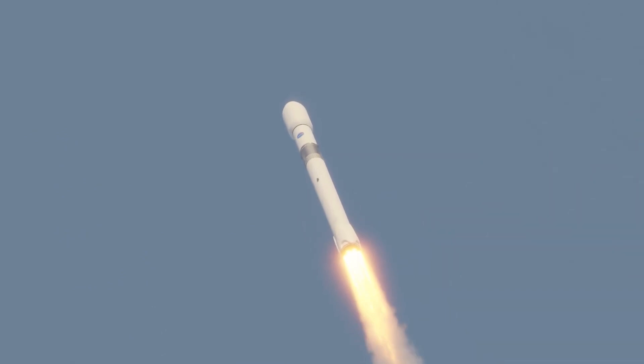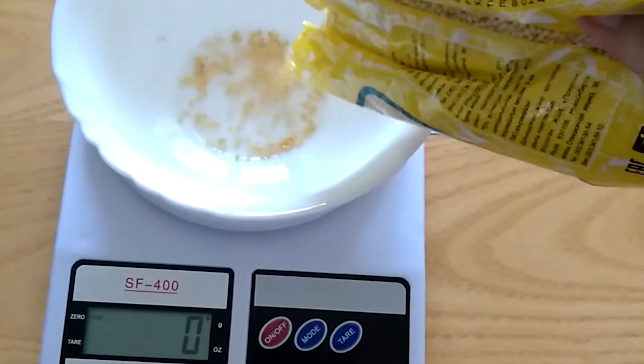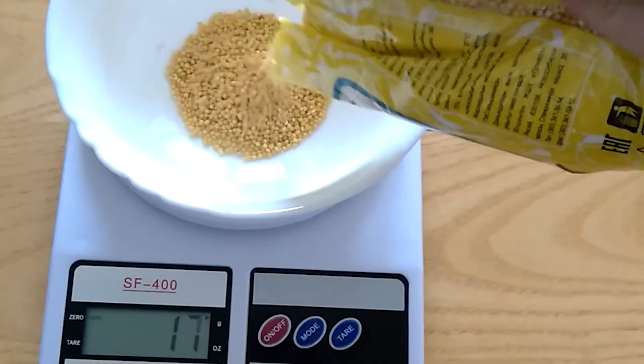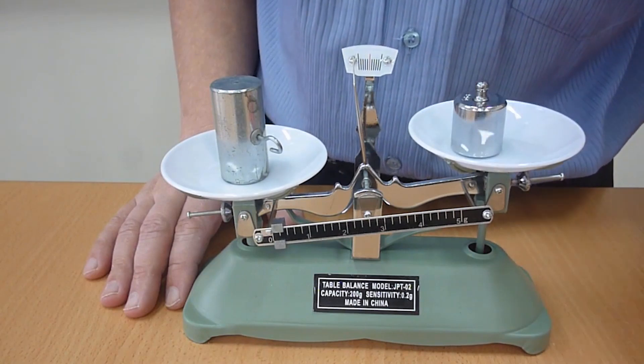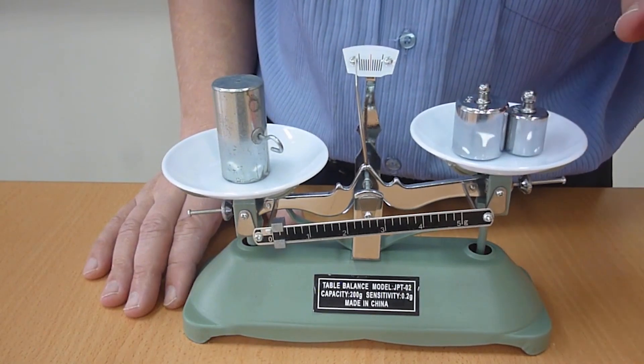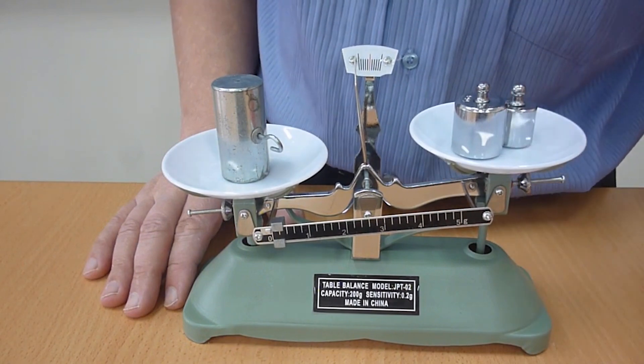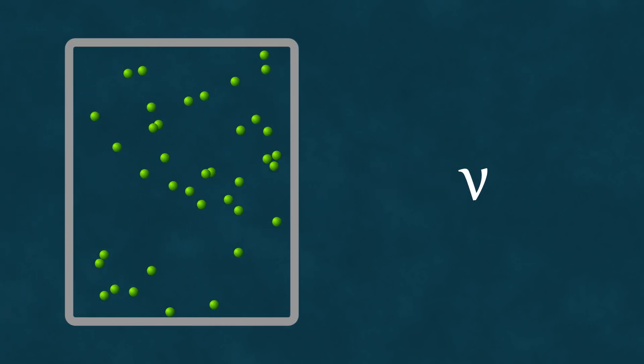In everyday life, we often use mass as a measure of the amount of substance. However, if we try to apply this approach in science, physicists, and especially chemists, will promptly correct us. They have a separate unit for measuring the amount of substance, which is measured in moles and defined as the number of structural units, e.g. atoms or molecules, in a specific portion of that substance.